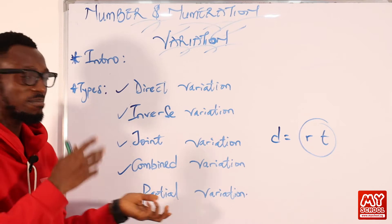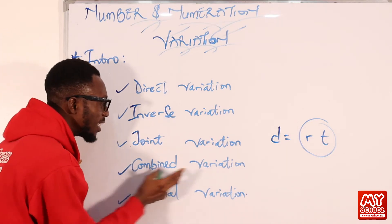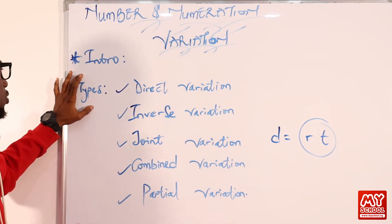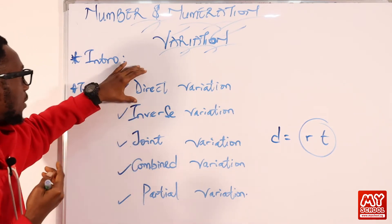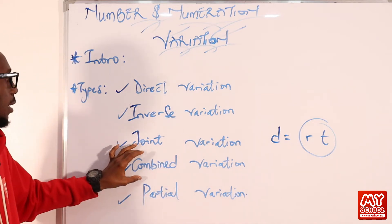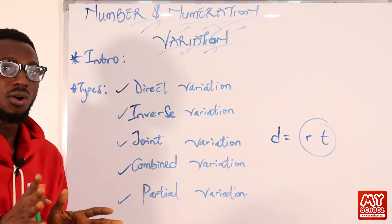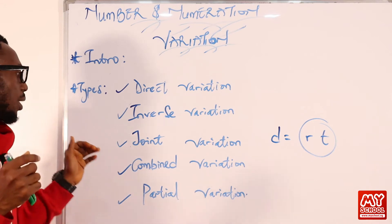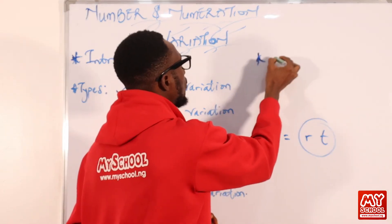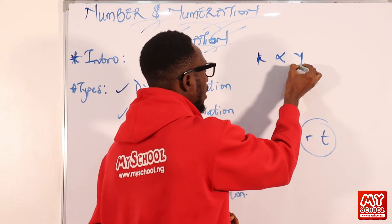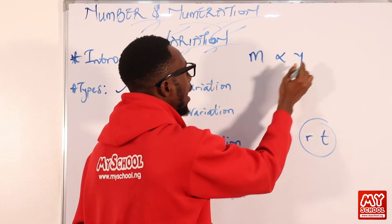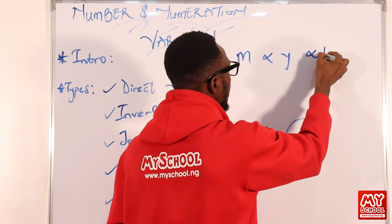In combined variation, you're actually combining types of variations together. In combined variation, you can have direct variation and inverse variation in the same equation. For instance, m varies directly as y and inversely as p.